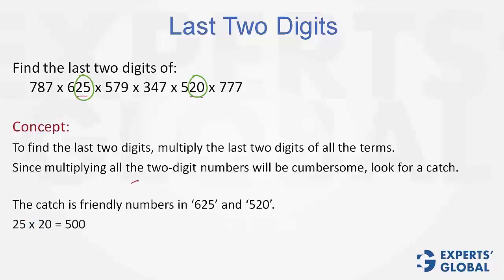And then, double 0 multiplied by all the other last 2 digits - 87, 79, 47, 77 - would be double 0 only. So the answer is going to be double 0 in this one.